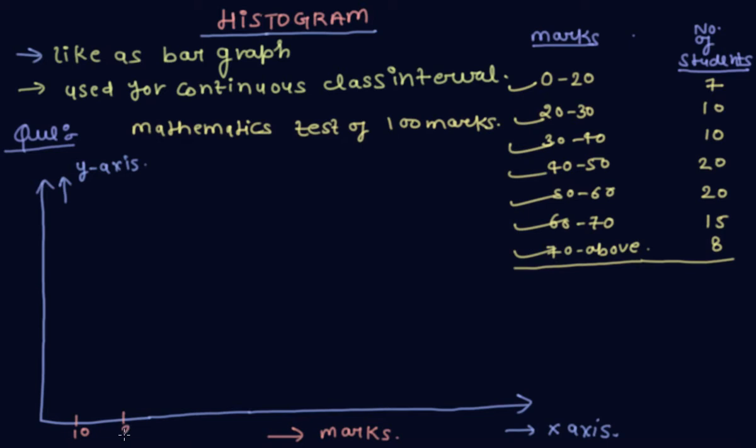10, 20, 30, 40, 50, 60, 70, 80, 90, and 100. And in y-axis, number of students: 2, 4, 6, 8, 10, 12, 14, 16, 18, 20.